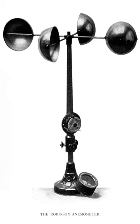An anemometer is a device used for measuring wind speed and direction, and is also a common weather station instrument. The term is derived from the Greek word anemos, which means wind, and is used to describe any wind speed instrument used in meteorology. The first known description of an anemometer was given by Leon Battista Alberti in 1450.